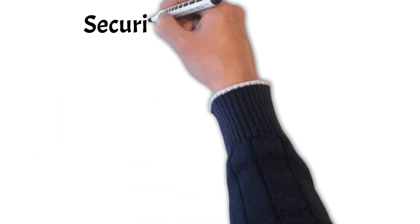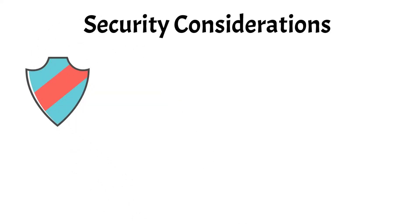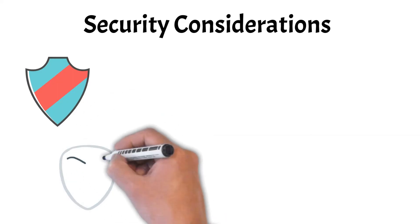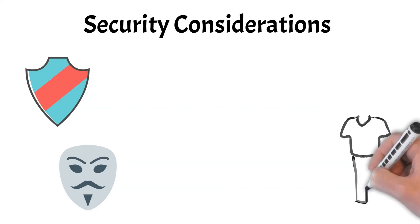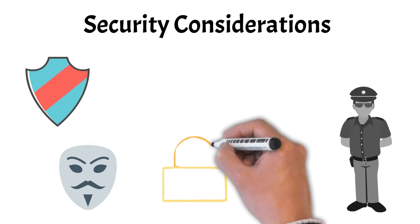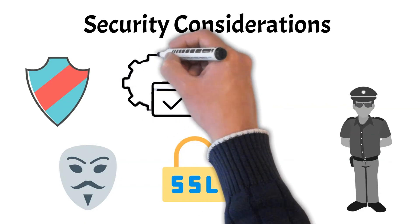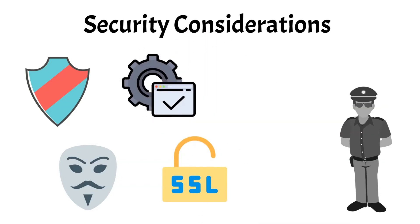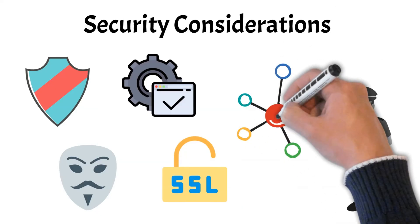Now let's talk about security considerations. When considering security for MAC addresses, it's important to be aware of their potential vulnerabilities. Although MAC addresses are unique to each device, they can be spoofed by attackers to impersonate legitimate devices and gain unauthorized access to a network. To mitigate this risk, employ network access controls that restrict which devices can connect based on their MAC addresses, and use encryption protocols to secure data in transit. Regularly update your network equipment and implement robust authentication mechanisms to further protect against unauthorized access. Additionally, consider using MAC address filtering combined with other security measures to enhance your network's overall security posture.